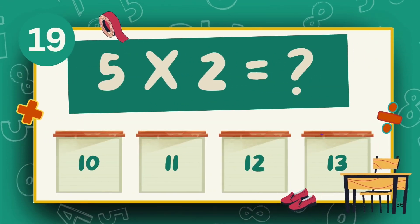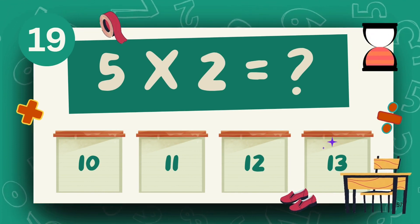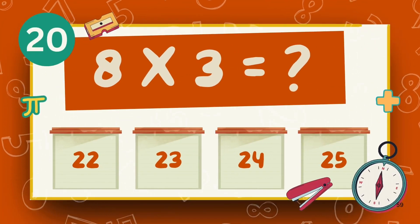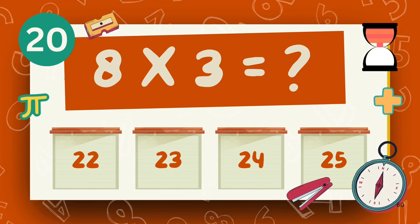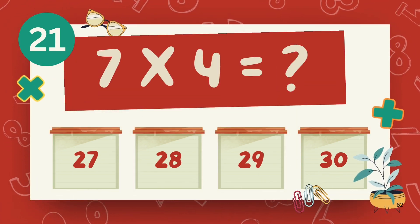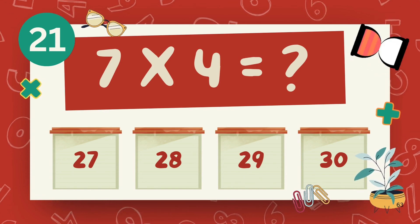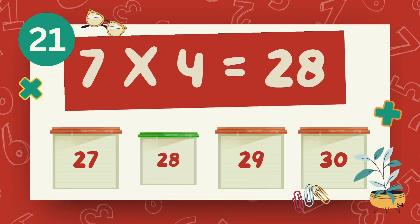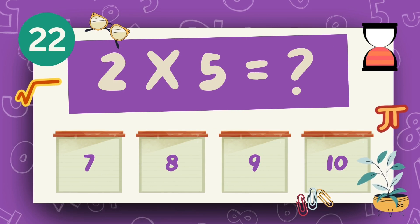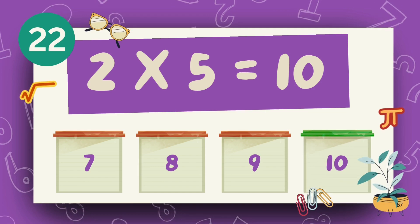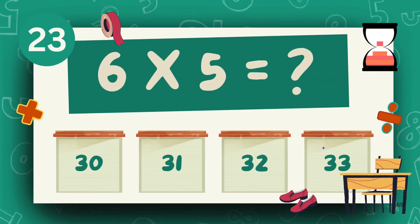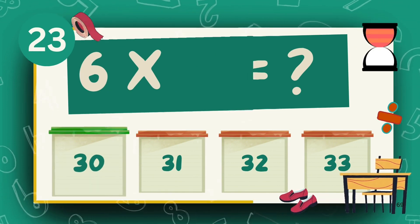What is 5 multiply 4? What is 5 multiply 2? The answer is 24. What is 6 multiply 5? The answer is 30.